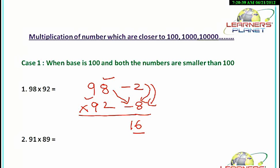Next, we find the cross subtraction. We can do either 98 minus 8 or 92 minus 2 — in both cases we get the same result. So 92 minus 2, or 98 minus 8, both give us 90. Therefore 98 into 92 gives the answer 9016. It's very simple — just observe the pattern and do it quickly.